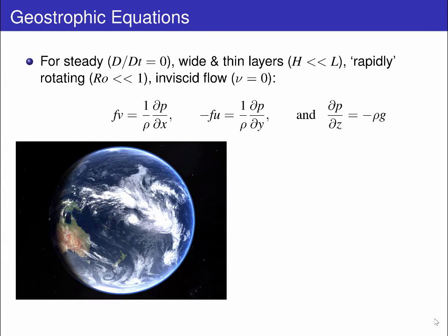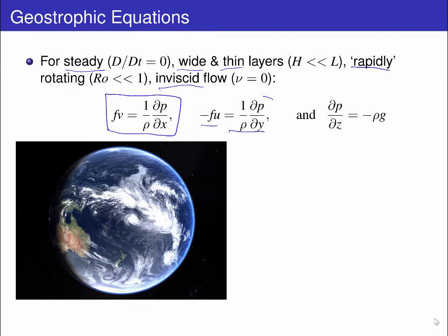We start with the Geostrophic Equations, developed from the Rotating Momentum Equations with the assumptions that the flow is steady, wide and thin, rapidly rotating and inviscid. In the horizontal directions there is a balance between the Coriolis forces and the horizontal pressure gradients, and in the vertical the fluid is hydrostatic.